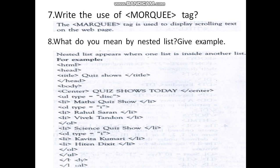Eighth question: What do you mean by nested list? Give an example. A nested list appears when one list is inside another list.